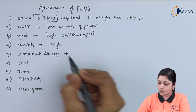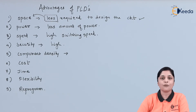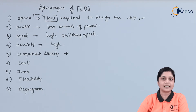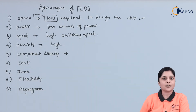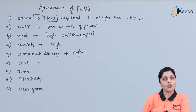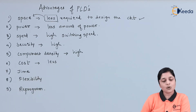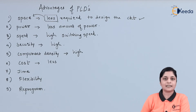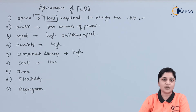The next factor is component density. Component density defines the number of components used or implemented to design a circuit. PLDs provide a high amount of component density to design the circuit. And the cost required to design the circuit with the use of PLDs is very less, so less cost is always required. This is one of the most important advantages of programmable logic devices.